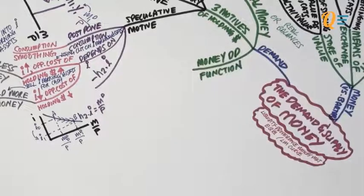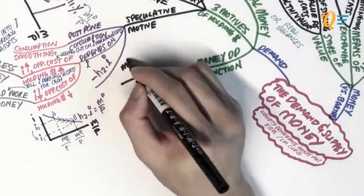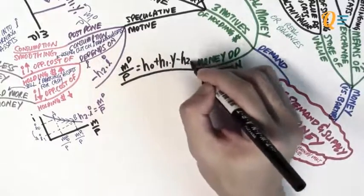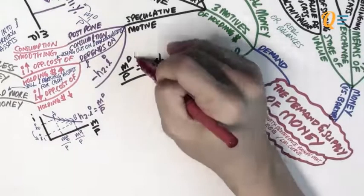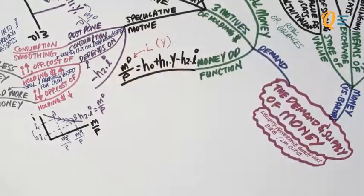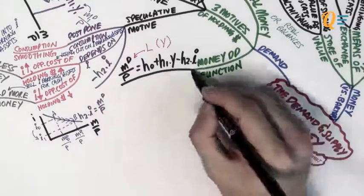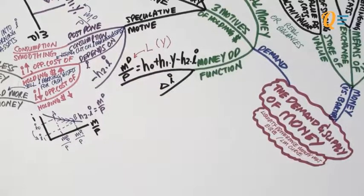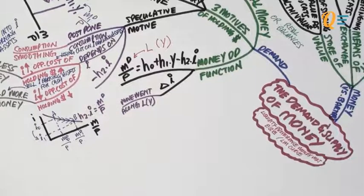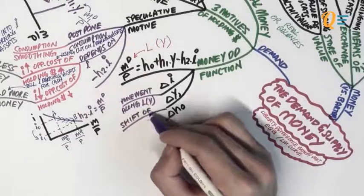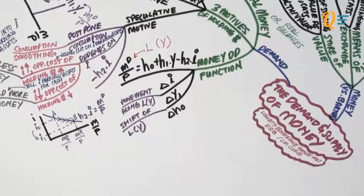Now that we know the three motives of holding money, we can look at the money demand function, which will help you derive the LM curve in the next video. You simply add up all three motives of holding money and you have the money demand function. The money demand function is also known as L, which is a function of Y — where L stands for liquid assets. When there is a change in interest rates, which is an endogenous variable, there will be a movement along L. When there is a change in income or H0, these are exogenous variables, so there will be a shift of the money demand curve.